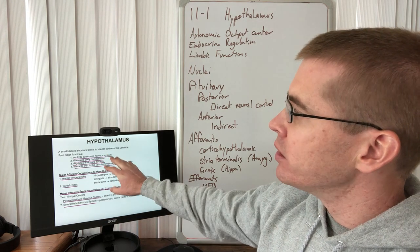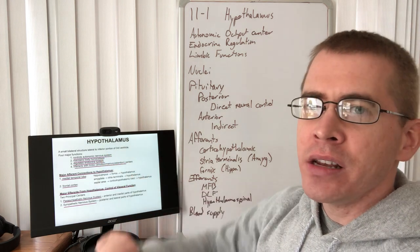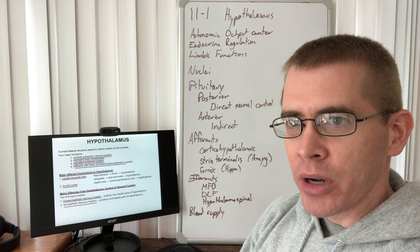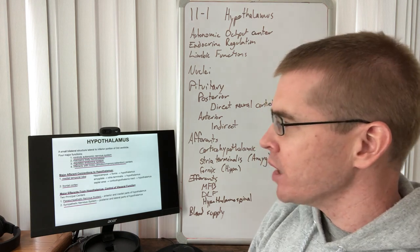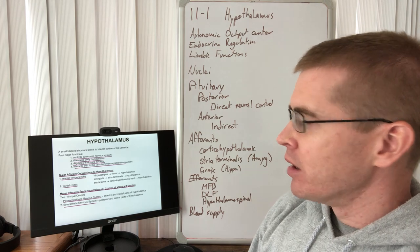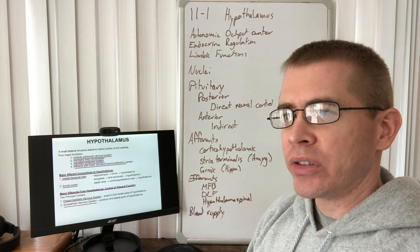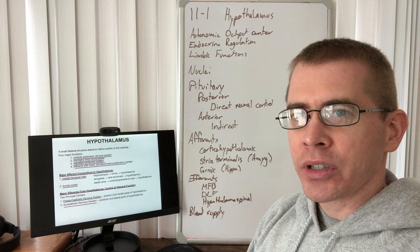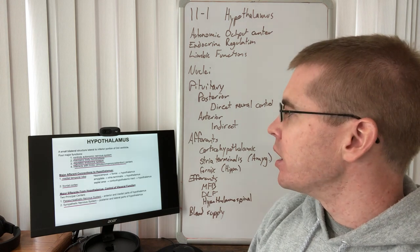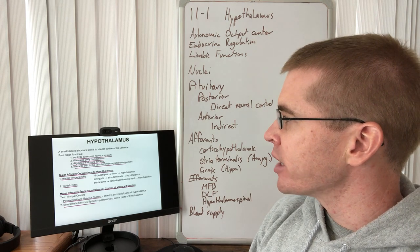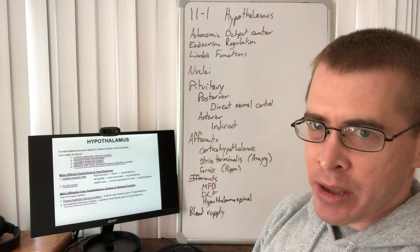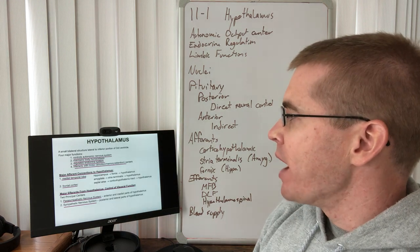Those distinct nuclei also regulate the release of hormones from the pituitary. And so we'll talk about that a little bit. Also, the limbic system informs the hypothalamus and vice versa. So there are connections from things like the amygdala and the septal nuclei to the hypothalamus.